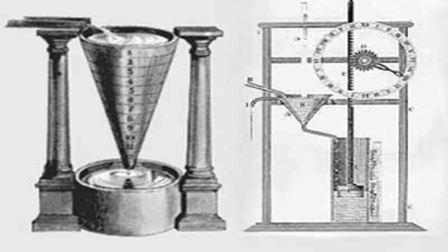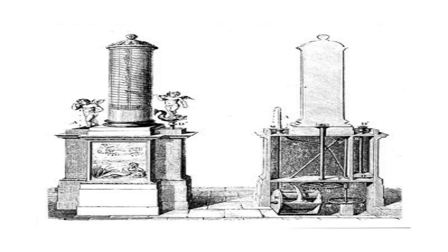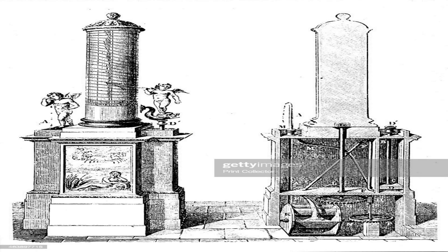Why was Ctesibius' float-type klepsidra important? Ctesibius' float-type klepsidra was one of the most advanced and sophisticated inventions of ancient times. It demonstrated the principles of pneumatics and hydraulics and paved the way for later developments in engineering and science. The float-type klepsidra was widely used in ancient Greece and Rome for various purposes.